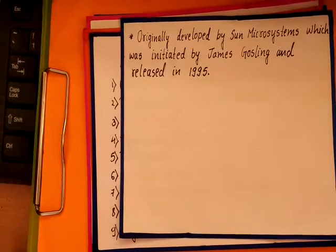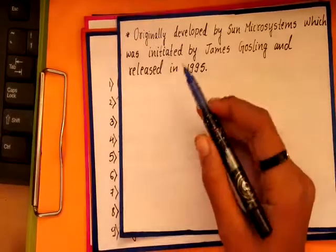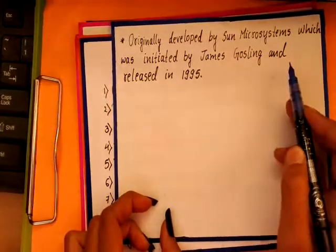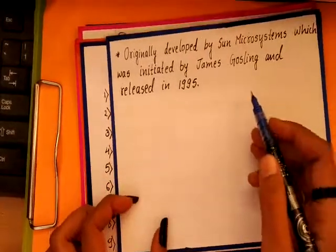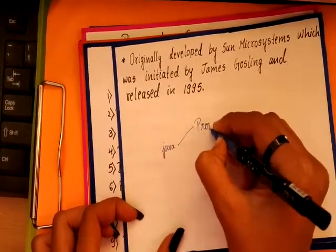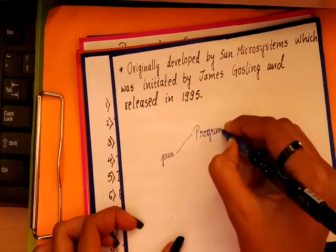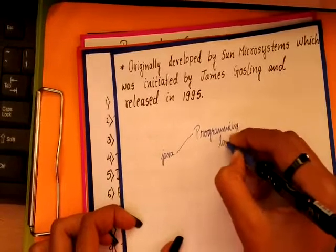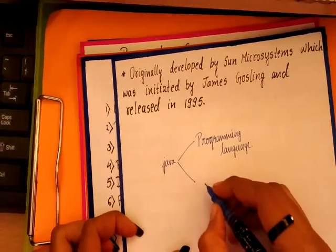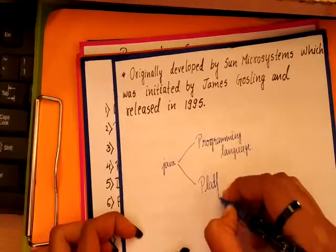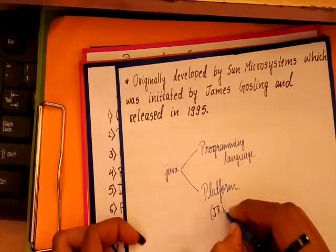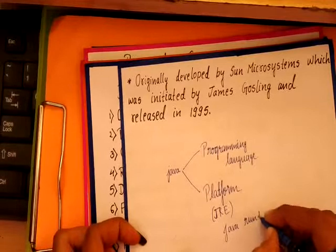Java is a high-level, object-oriented programming language. Originally, Java was developed by Sun Microsystems, which was initiated by James Gosling and released in 1995. We can define Java as a programming language, as we can write the codes and run applications in it. We can also define it as a platform, and the most important property is JRE, that is Java Runtime Environment.